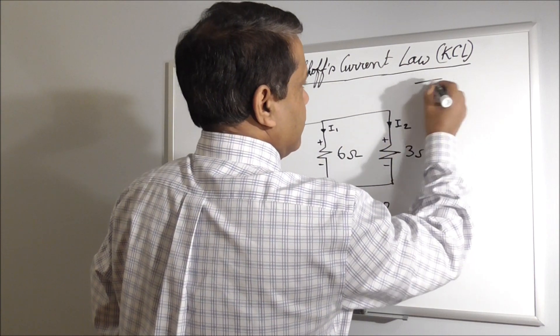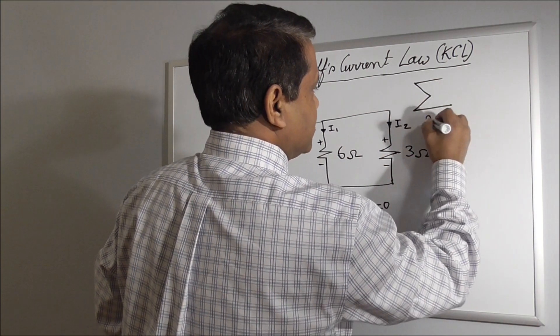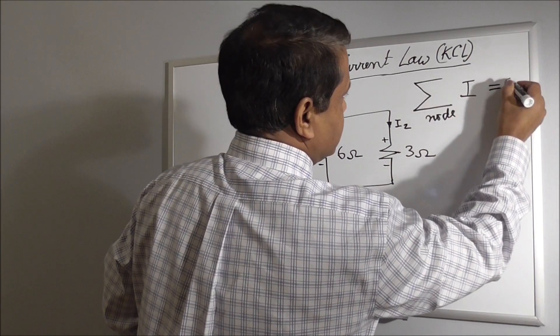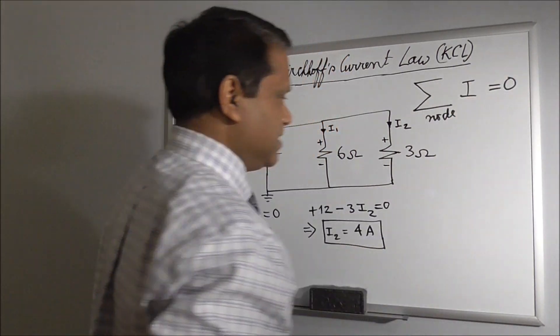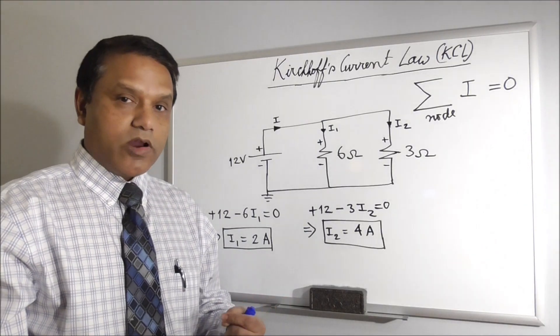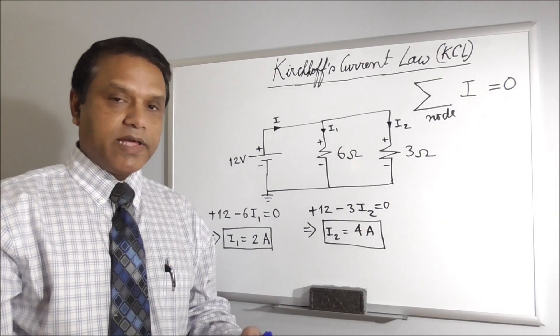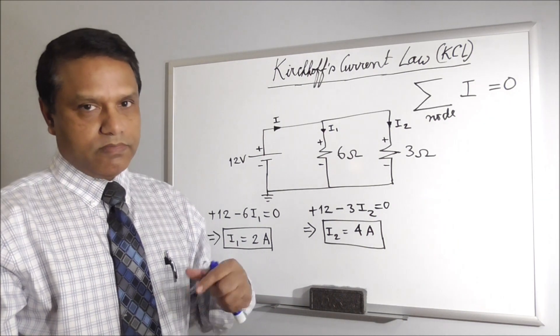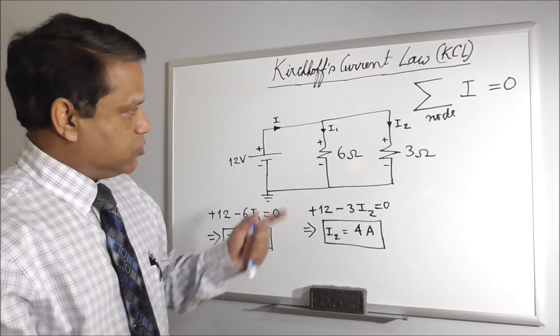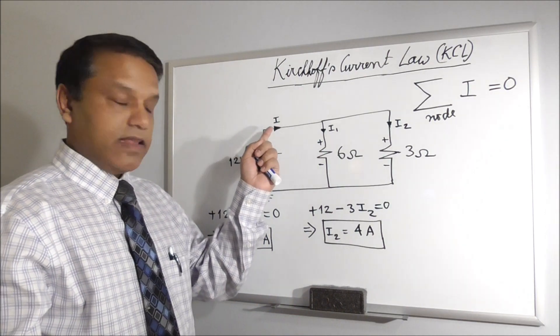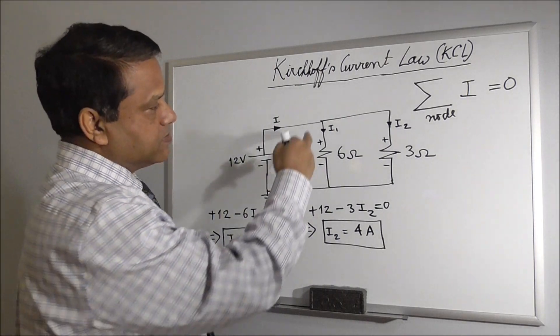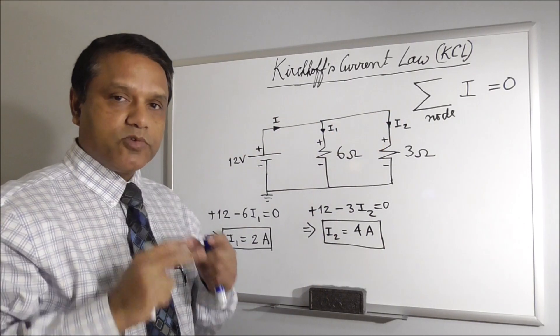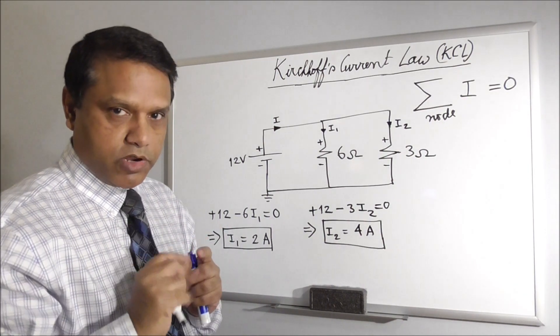So I can do KCL. The sum of all currents at a node equal to 0. Currents could be incoming or outgoing. If we assume the incoming current as positive, we have to consider the outgoing current as negative or vice versa. So to find this current, we will apply KCL at this node. How many branches are connected to this node? 3. One branch, one branch, one branch. So you have to write currents for all the branches. You cannot leave out 1 or 2.